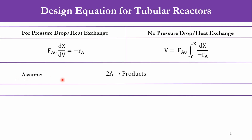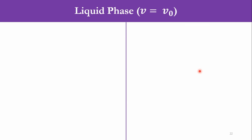Let us assume a reaction in which 2 moles of A react to produce products irreversibly. Accordingly, the rate law is: −rA = k·CA², assuming an elementary system. For the liquid phase system, V = V₀ — there is no change in the volumetric flow rate. So, dX/dV = −rA/FA0, and −rA = k·CA²/FA0.